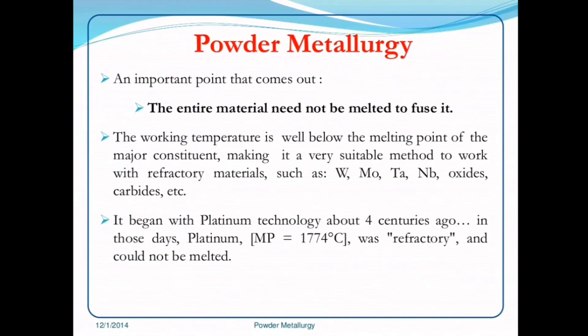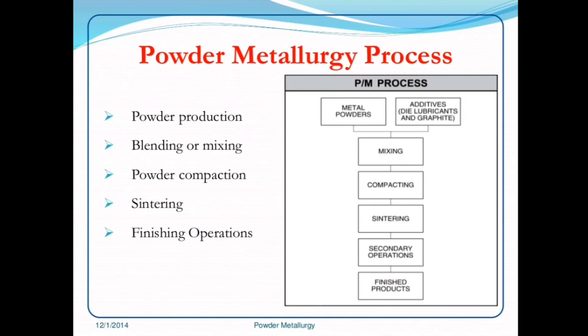The entire material need not be melted to fuse it; the working temperature is well below the melting point of the major constituent. If the major constituent is copper, then the working temperature is well below the melting point of copper only. It is a very suitable method to work with refractory materials such as tungsten, molybdenum, tantalum, niobium, oxides, carbides, etc. It began with platinum technology about four centuries ago — in those days, platinum with a melting point of 1774°C was refractory and could not be melted.